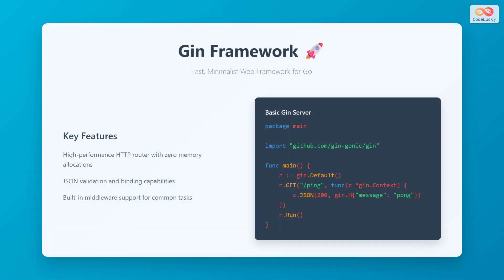Let's start with the JIN framework, one of the most widely adopted web frameworks in the Go community. JIN is designed with performance as a top priority, boasting a high-performance HTTP router that achieves zero memory allocations during routing, making it incredibly fast and memory efficient.